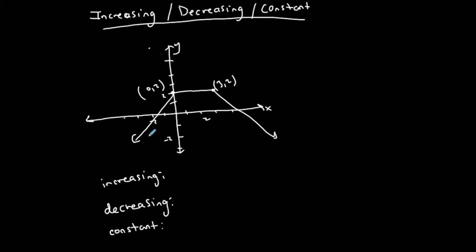When you write intervals for a function where it is increasing, decreasing, or constant, you always write them with respect to x. In other words, what are the x-coordinates where the function is increasing? What are the x-coordinates where it is decreasing? And what are the x-coordinates where it is constant?